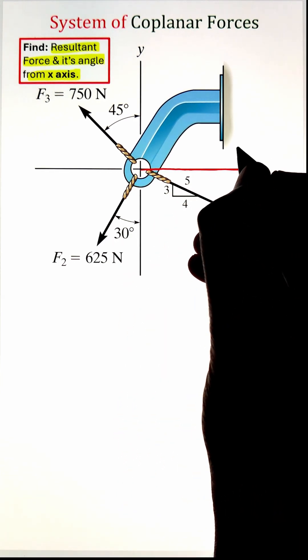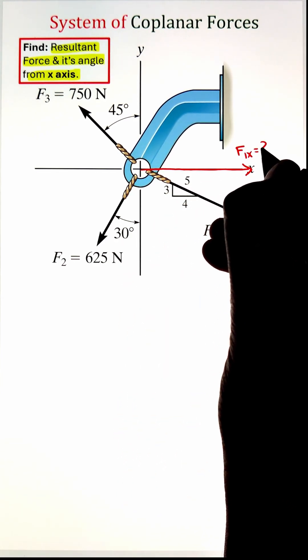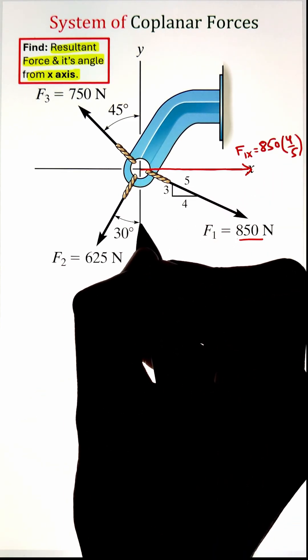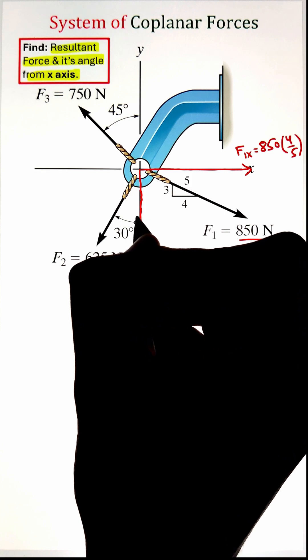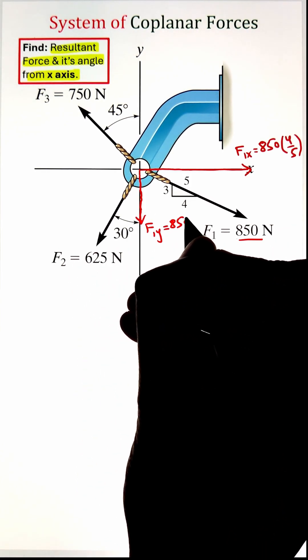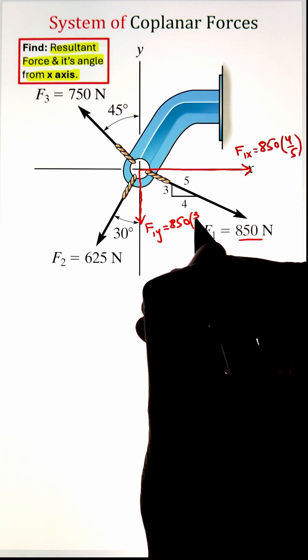Our force F1 of 850 Newton can be converted into F1x by multiplying it with the ratio of the triangle shown here of 4 divided by 5, whereas the vertical component along the y direction can be calculated by multiplying 850 with a ratio of 3 over 5.